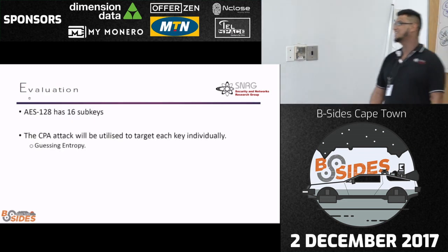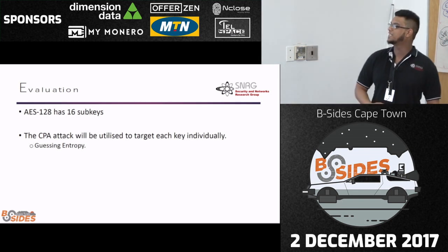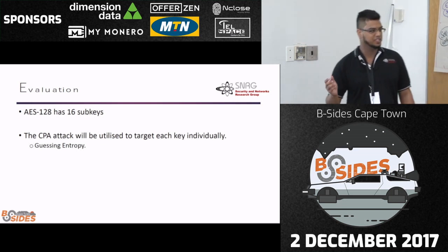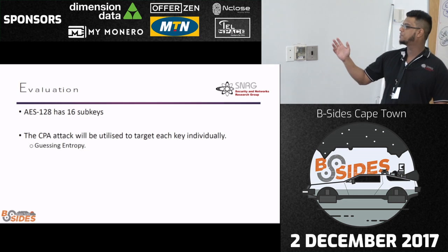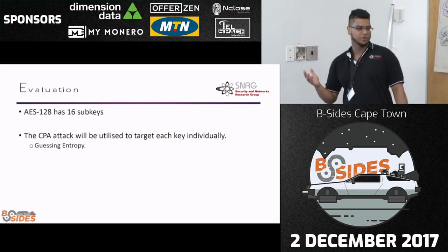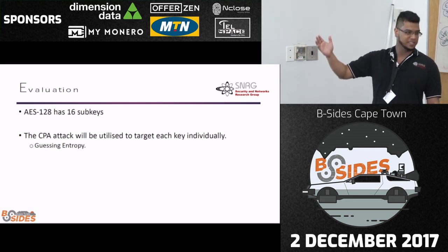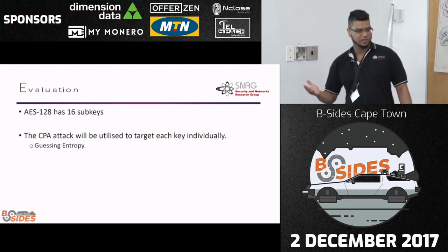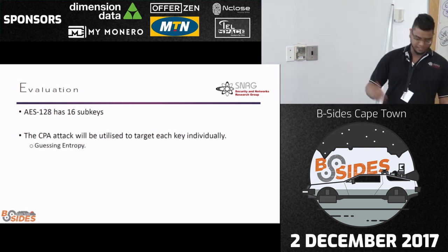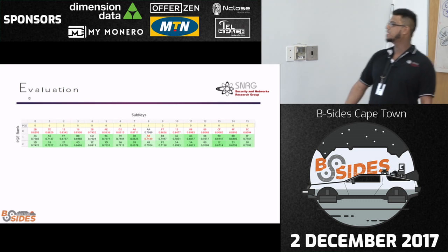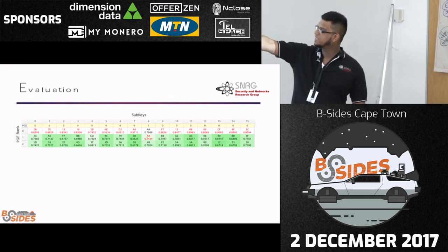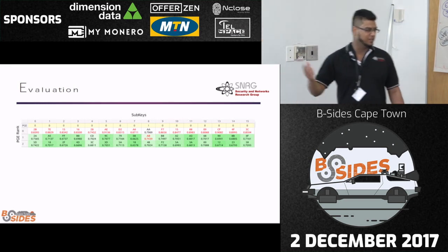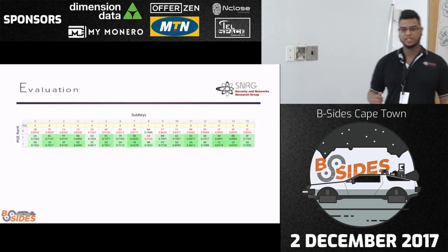AES has 16 sub-keys, so you can attack each sub-key individually — focus on sub-key zero, sub-key five. Because we know what the sub-key is, we can build a guessing entropy or ranking system to determine if our equation gets the correct sub-key. Normally the correct sub-key rises to the top when the guessing entropy is zero, so we can evaluate results and see if we are recovering the correct sub-key.